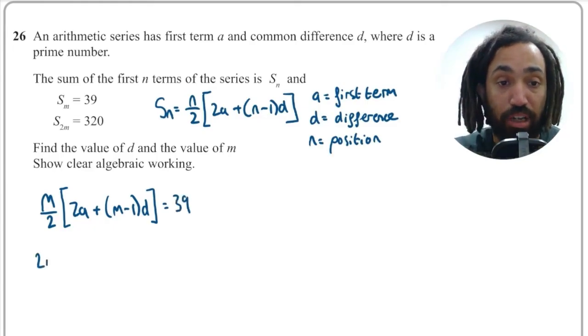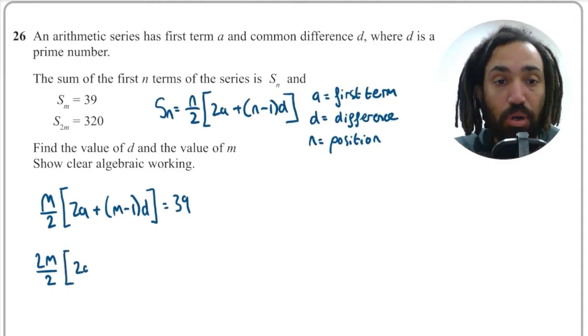And the second formula I can create is 2M over 2, because 2M is the position of this particular summation, multiplied by 2A and then 2M minus 1D and that is equal to 320. So I've got two equations there and we're going to solve them simultaneously because we've got two unknowns.